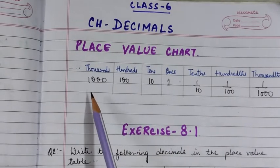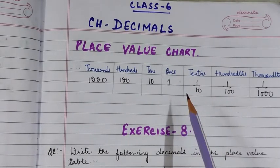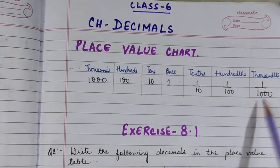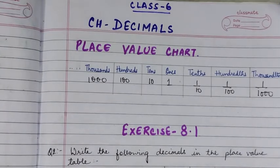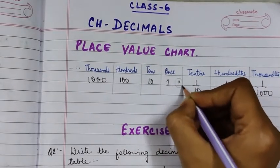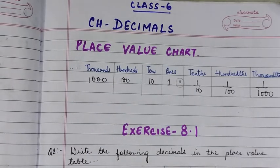All place values on the left of ones are multiples of ten — tens, hundreds, thousands — whereas on the right of ones the values are divided by ten, hundred, thousand, and so on. To separate these two parts we put a dot after ones, and this dot is called the decimal point. Now let us go to Exercise 8.1 to understand decimals further.